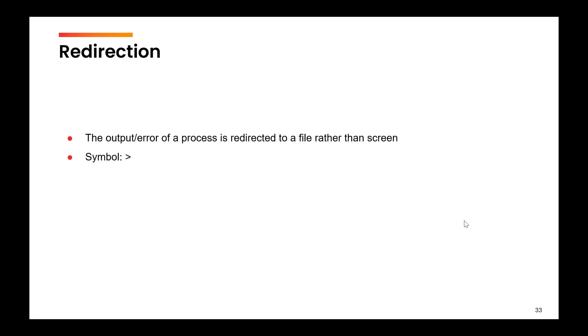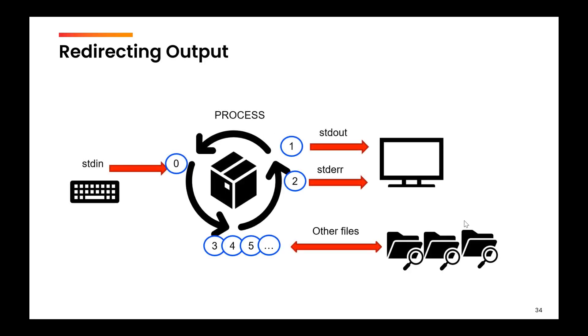To redirect the output or the error, the symbol is the greater-than symbol. The entire input and output process looks like this: we always get the input from the standard input device, which is the keyboard in most cases. Then the process or command executes and gives us either an output redirected to a standard output device, or an error redirected to a standard error device. In most cases both the standard output device and standard error device is our screen. But if you want to save those into user-created files, you have to use the concept of redirection.